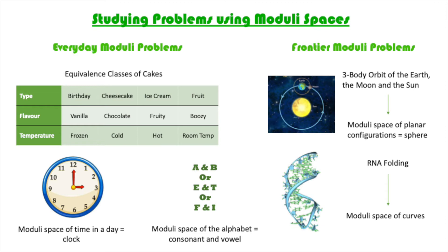I want to begin by proposing three seemingly unrelated problems. Can we try to study the gravitational interaction between the earth, the sun and the moon? What can we learn by mathematically classifying RNA viruses? Can we predict properties of quantum materials before they're made and tested?